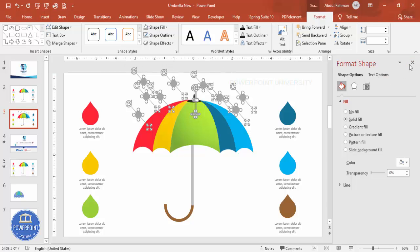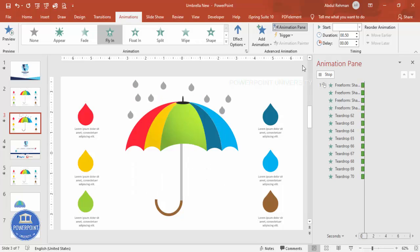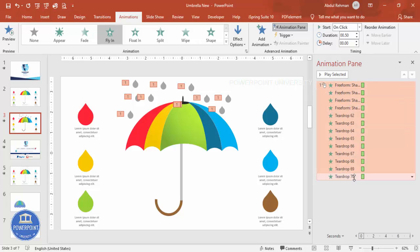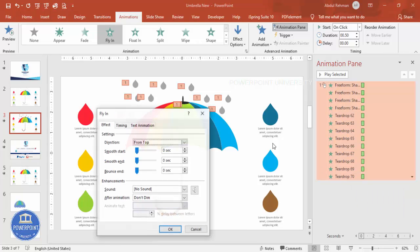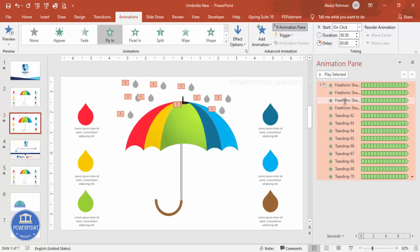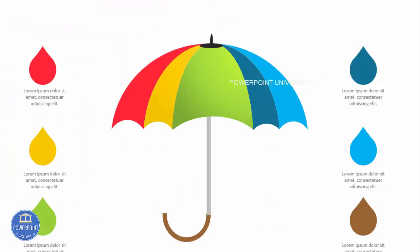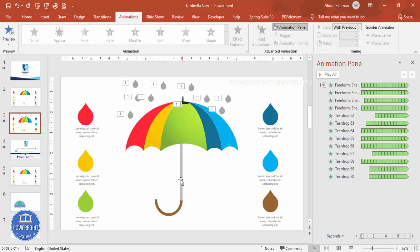Now add the animation effect. Go to Animations and enable the Animation Pane. Add an animation and choose Fly In — set the direction to From Top. Right-click, go to Effect Options > Timing, and set Repeat to Until End of Slide. Then randomly select individual teardrops and add delay values so the drops don't all fall at once. Now when you click, the raindrops fall continuously like this.